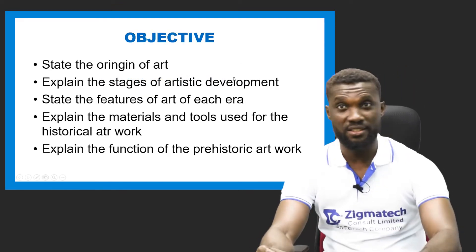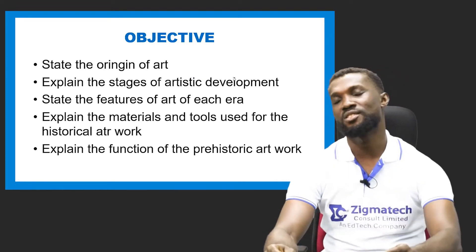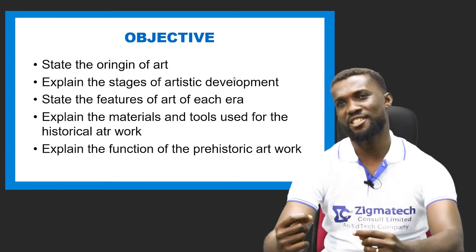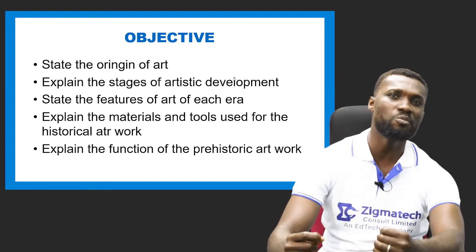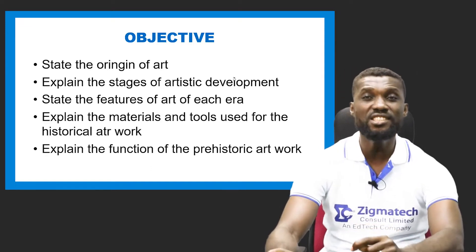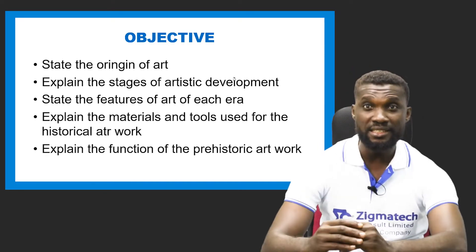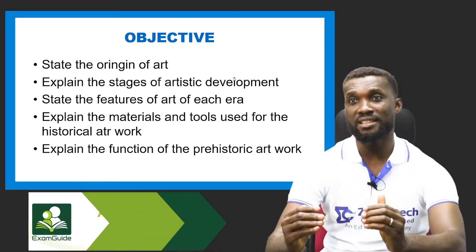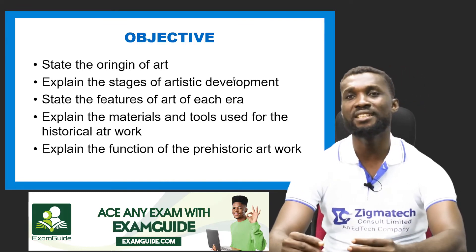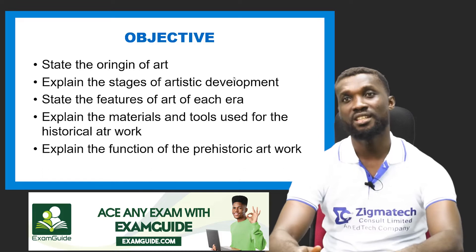Our specific objectives — some of the things I would want you to know at the end of this class: you'll be able to state the origin of art, explain the stages of artistic movement, state the features of art of each of the eras we are going to learn, look at the materials and tools used by prehistoric men, and talk about the functions of prehistoric art.